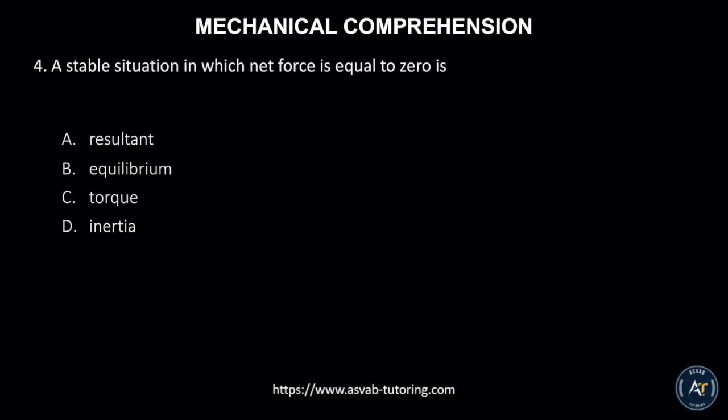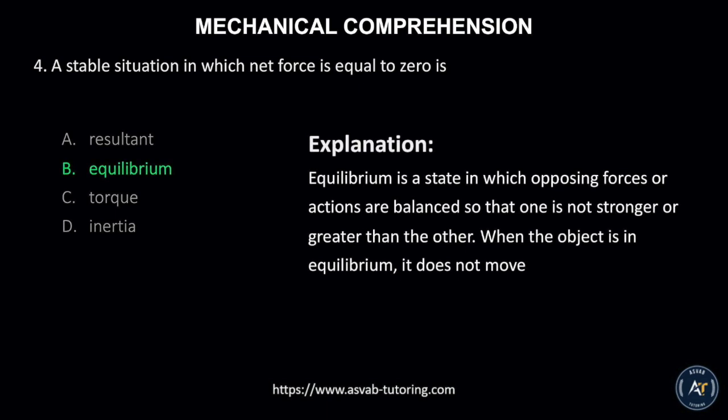Number 4. A stable situation in which net force is equal to zero is? A. Resultant, B. Equilibrium, C. Torque, or D. Inertia. The correct answer is B. Equilibrium. Equilibrium is a state in which opposing forces or actions are balanced so that one is not stronger or greater than the other. When the object is in equilibrium, it does not move.